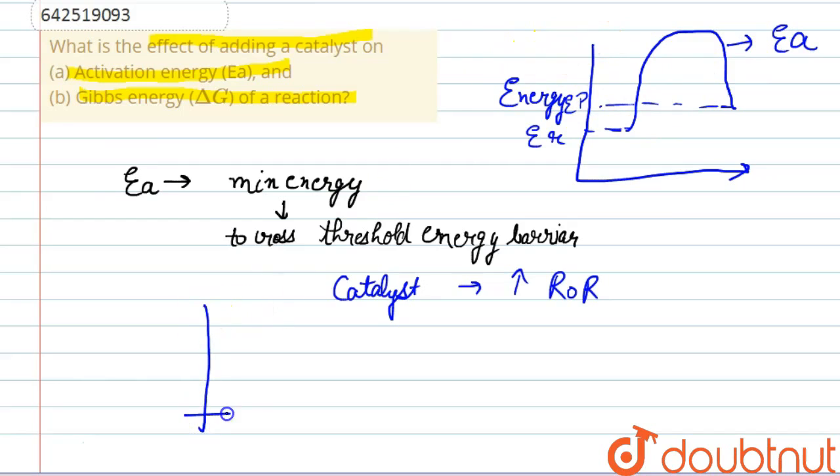Now, if the catalyst is present, the case will be like this. Energy of reactants will be this and energy of products as given this. Now, this will be the activation energy in case of catalyst. The activation energy will decrease. Catalyst will decrease the activation energy or the energy barrier and thus increase the rate of reaction.